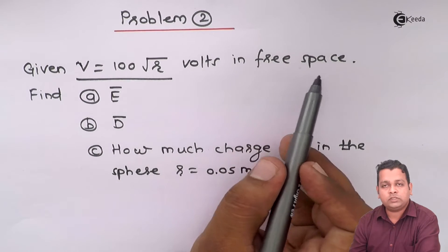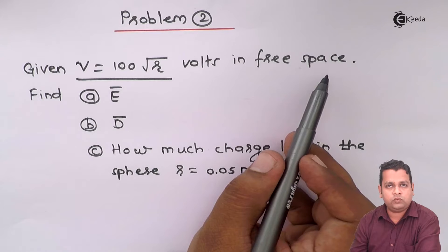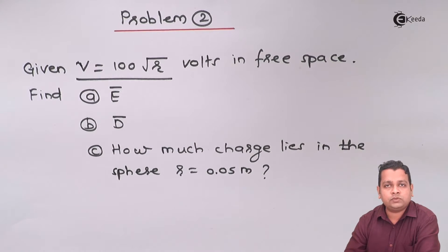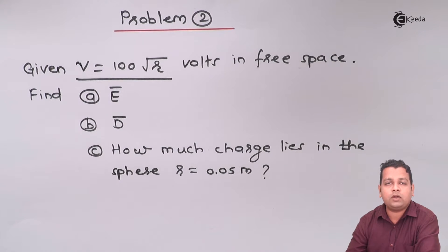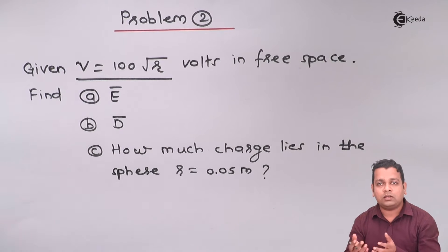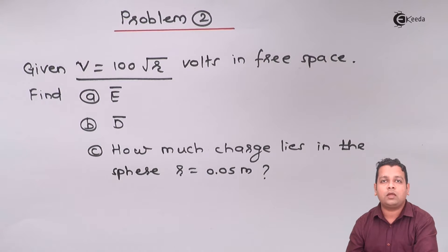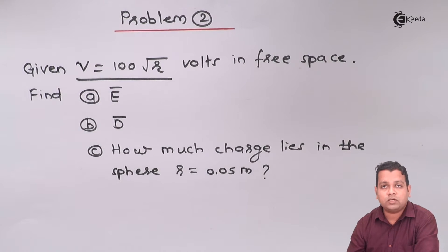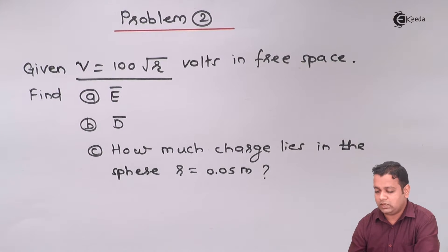The medium is free space, so we can use the value of epsilon_0, which is 8.854 × 10⁻¹² or alternatively 1/(36π) × 10⁻⁹.